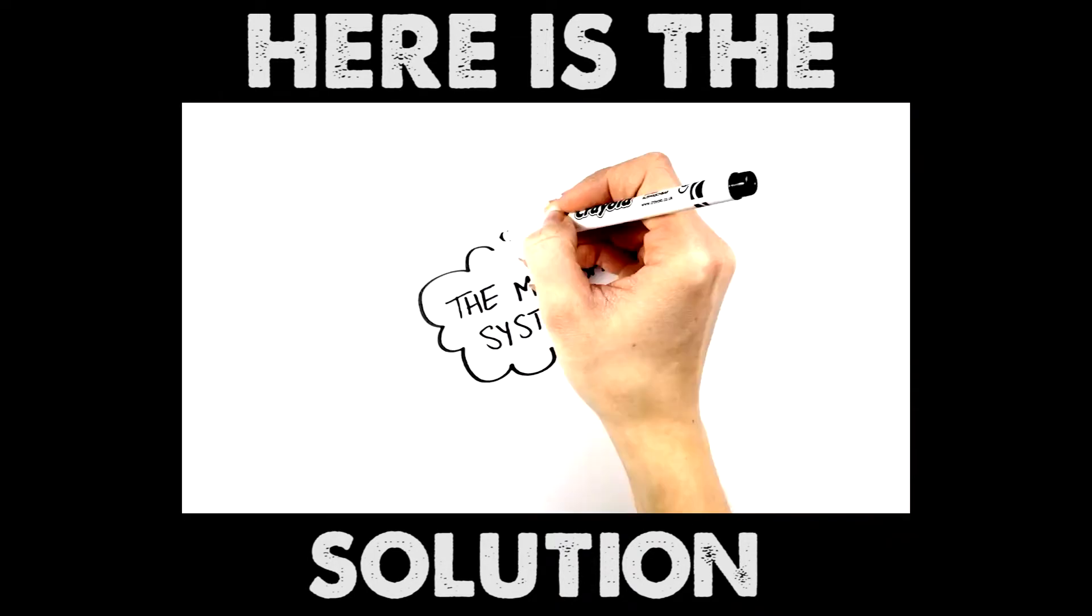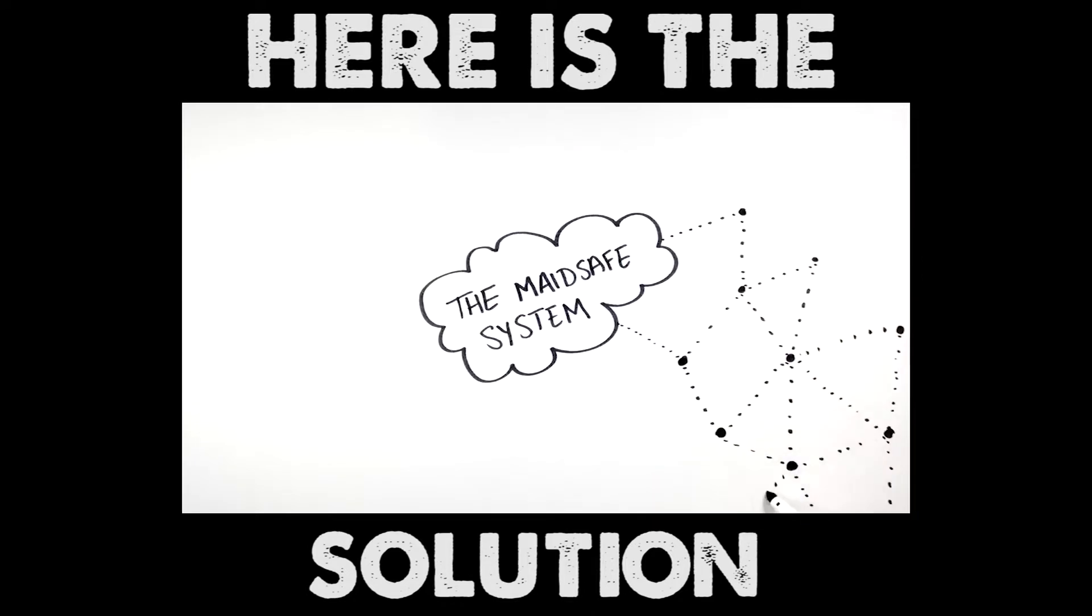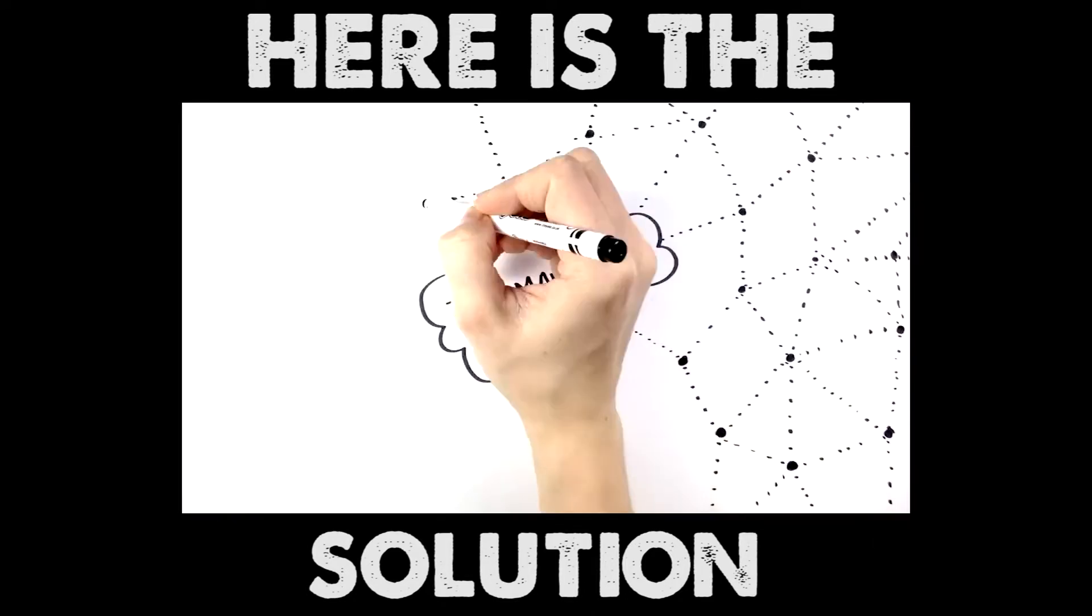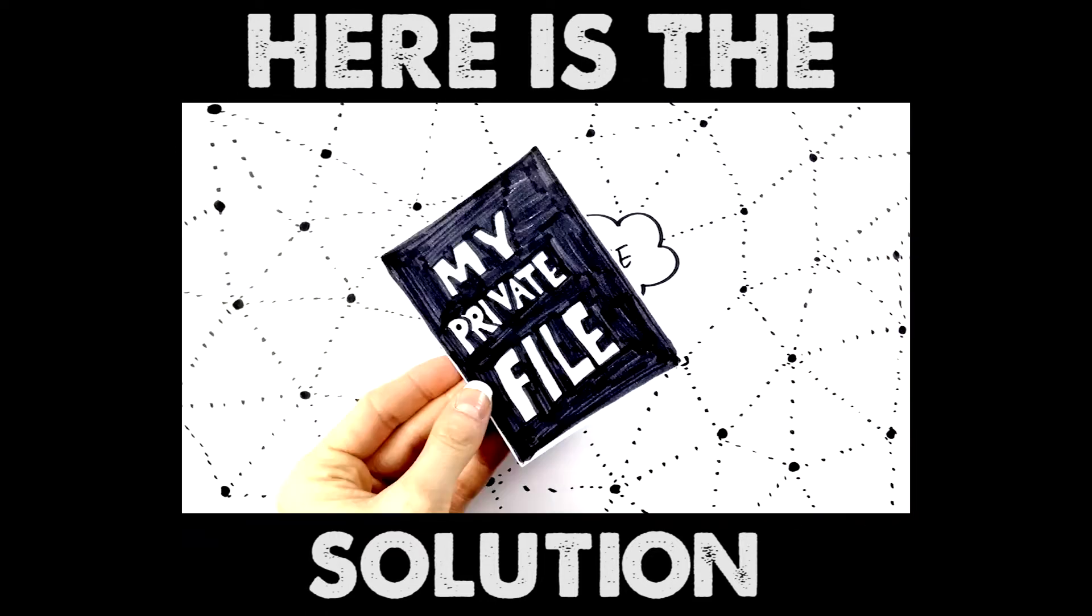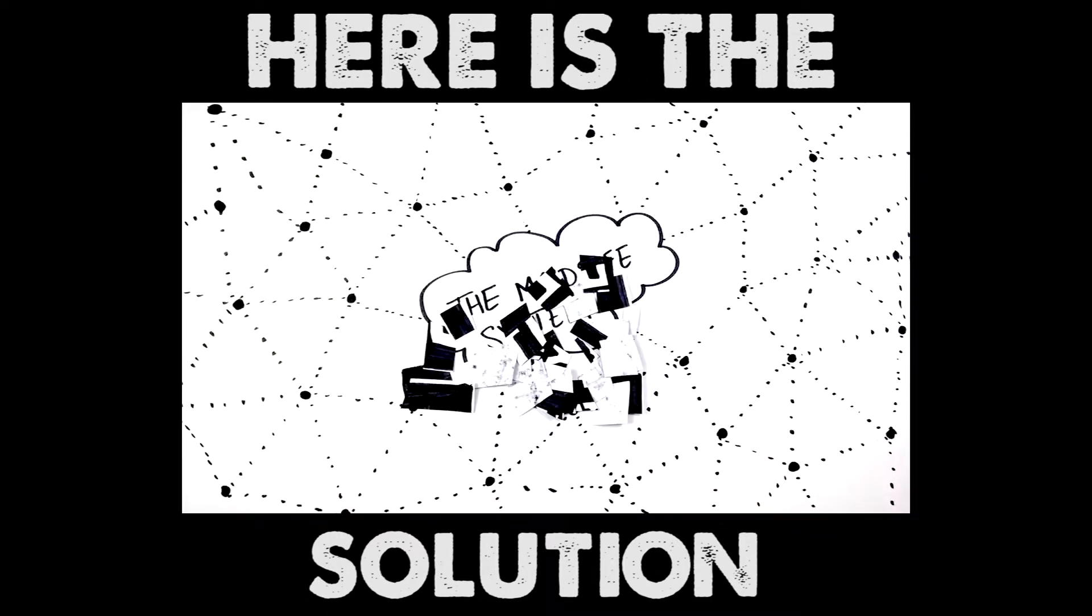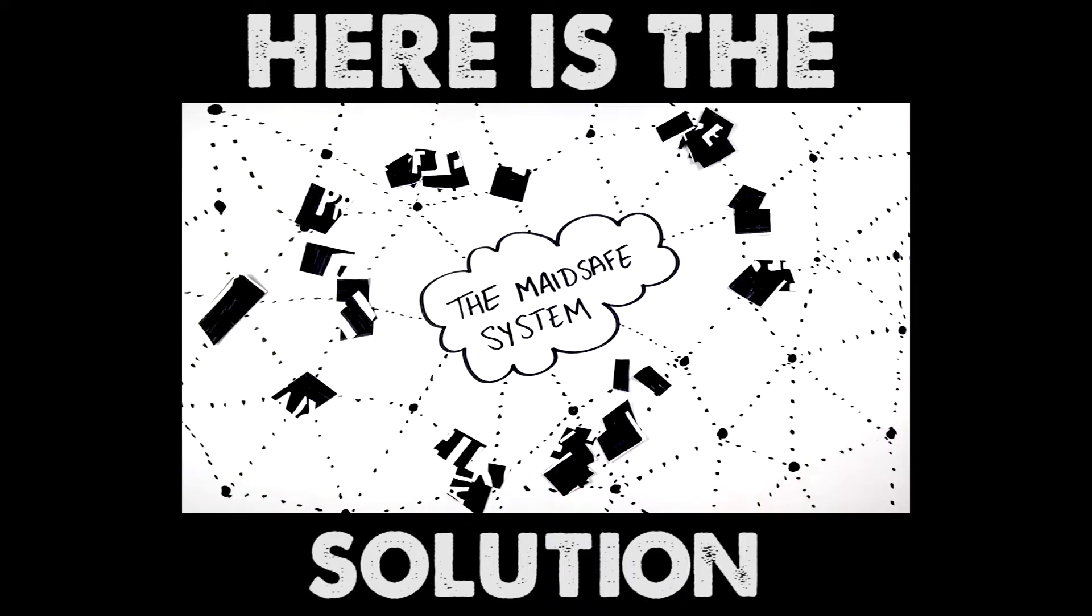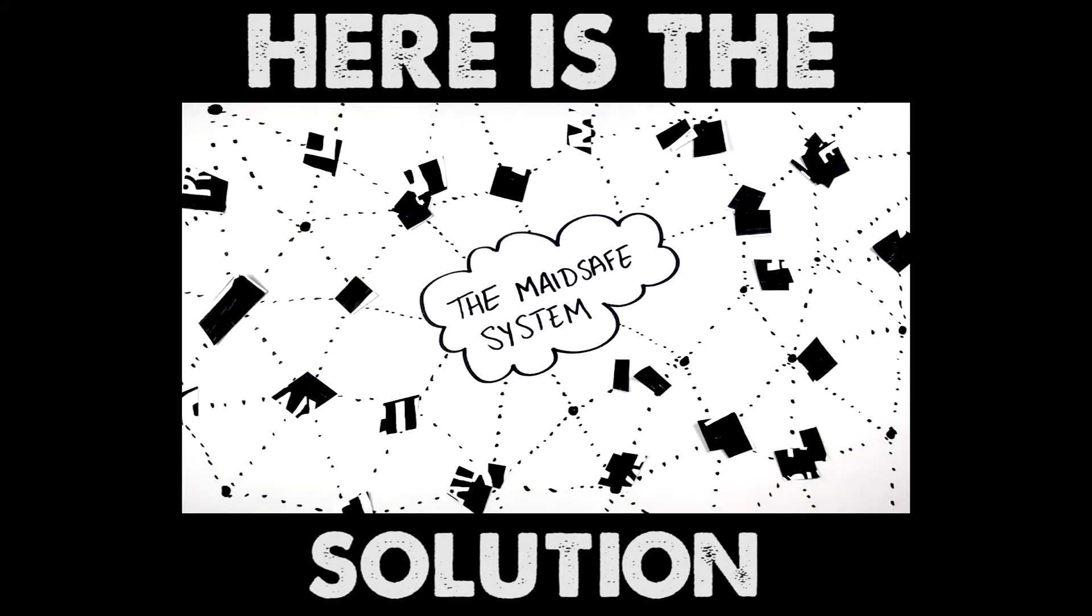In the MadeSafe system, data is never vulnerable. As soon as a document is saved, remarkable things happen. The data is automatically shredded and encrypted by a unique algorithm that uses the data itself to create the encryption keys required for the very high levels of encryption. This data is then distributed intelligently to the network.